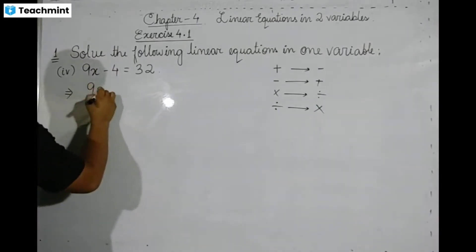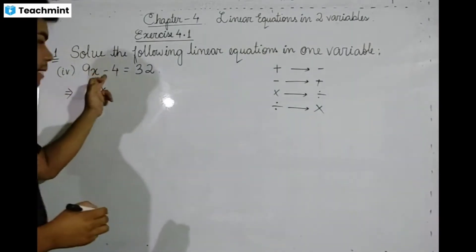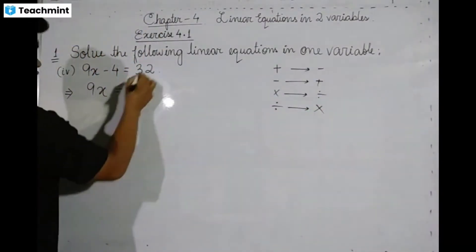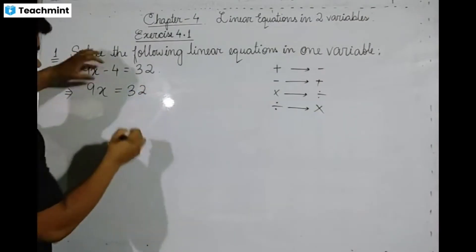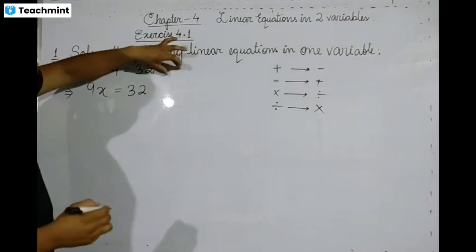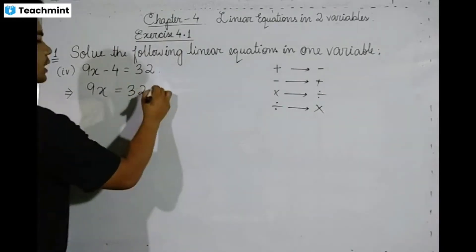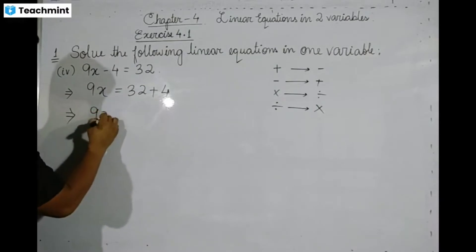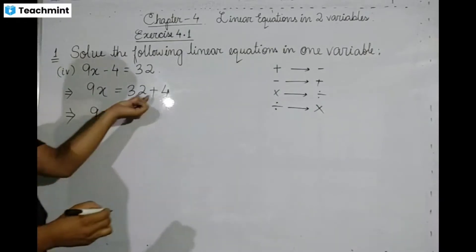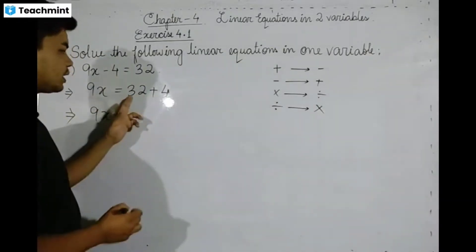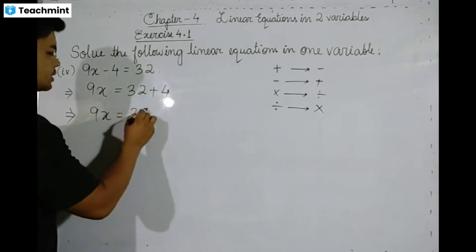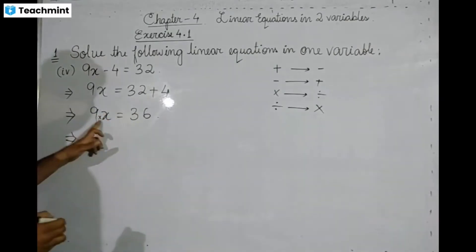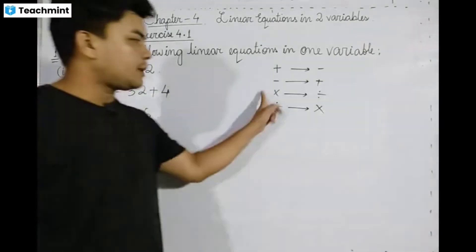Minus 4, minus 9 is equal to 1, plus 1 is equal to 32. Minus 4 is equal to 1, plus 1 is equal to 1 plus 4. Minus 6 is equal to 3.50. Minus 5 is equal to 3.10. Minus 8 is equal to 1, plus 1 is equal to 1.